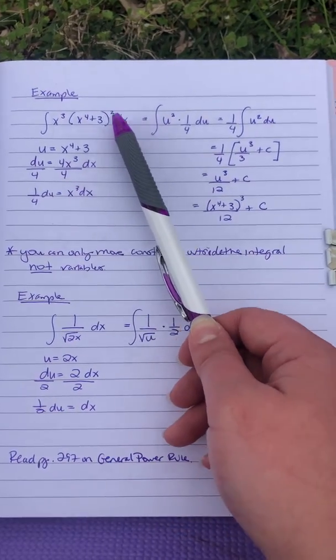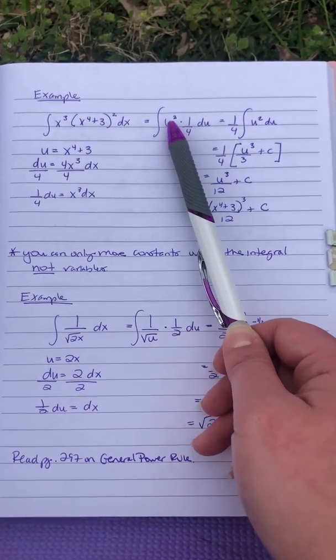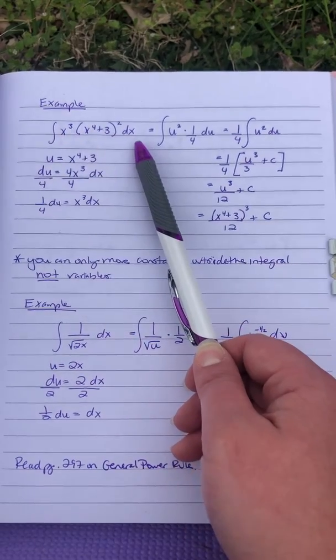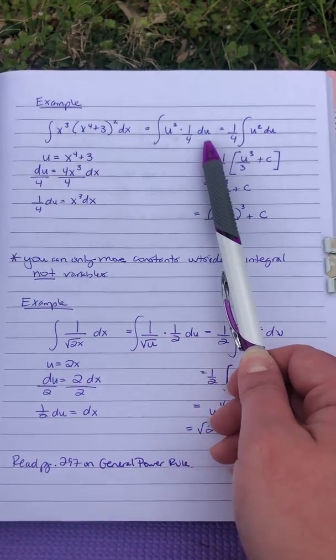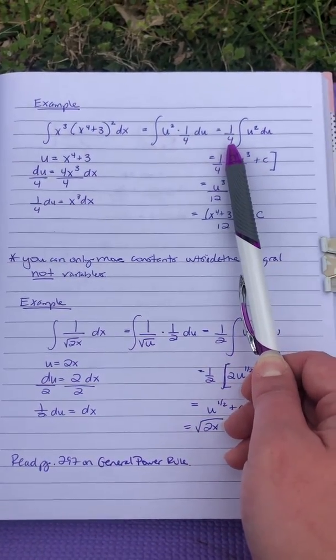So you just go back in and substitute, so this becomes u squared, and then x cubed dx becomes our one fourth du. Move the one fourth to the outside.